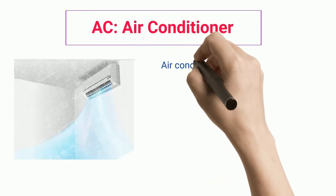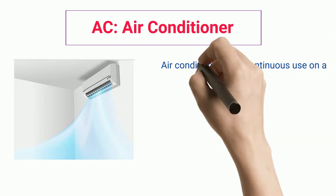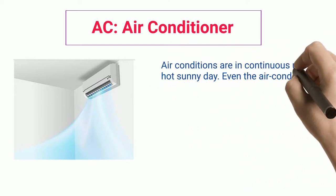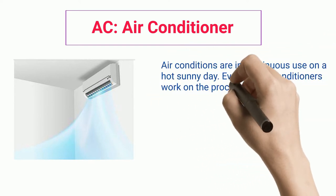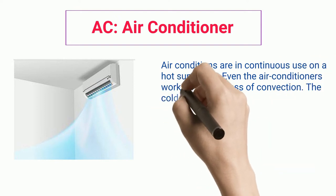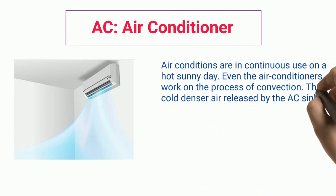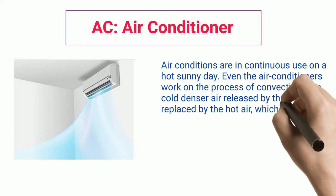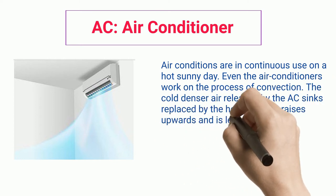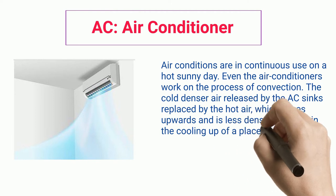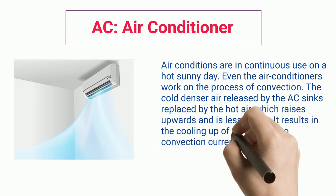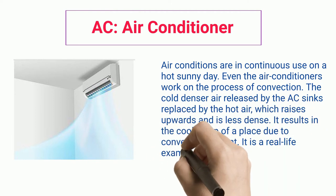AC Air Conditioner: Air conditioners are in continuous use on a hot sunny day. Even the air conditioners work on the process of convection. The cold denser air released by the AC sinks replaced by the hot air, which raises upwards, and is less dense. It results in the cooling up of a place due to convection current. It is a real-life example of convection heat transfer.